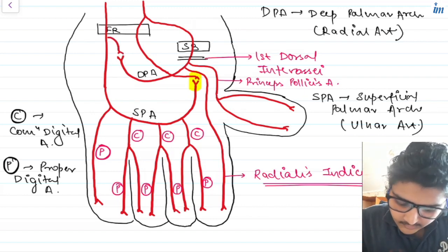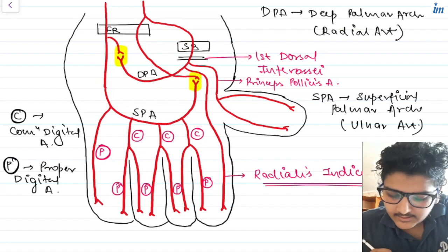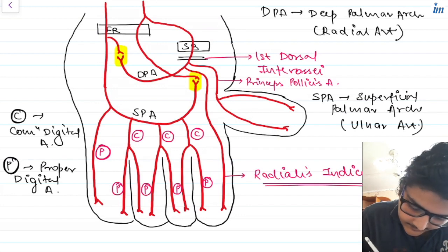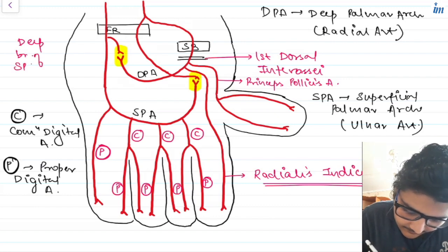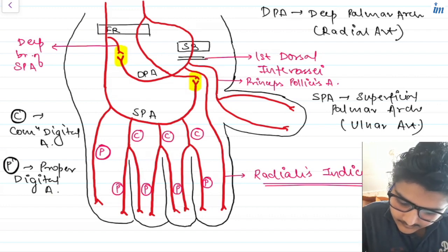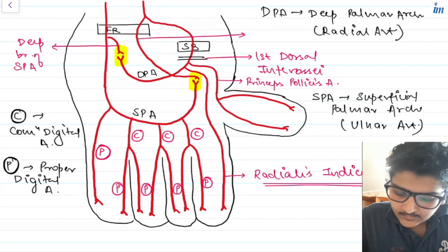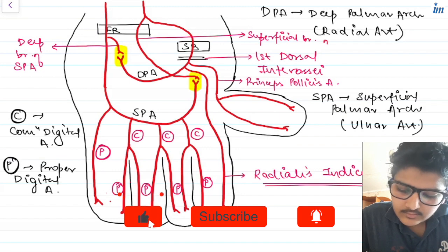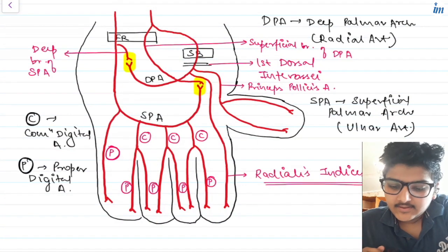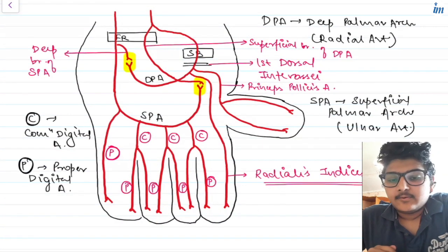Similarly, your superficial palmar artery will give a deep branch to anastomose with your deep palmar artery. So let's label everything: this is your deep branch of the superficial palmar artery, and here we have your superficial branch of your deep palmar artery.